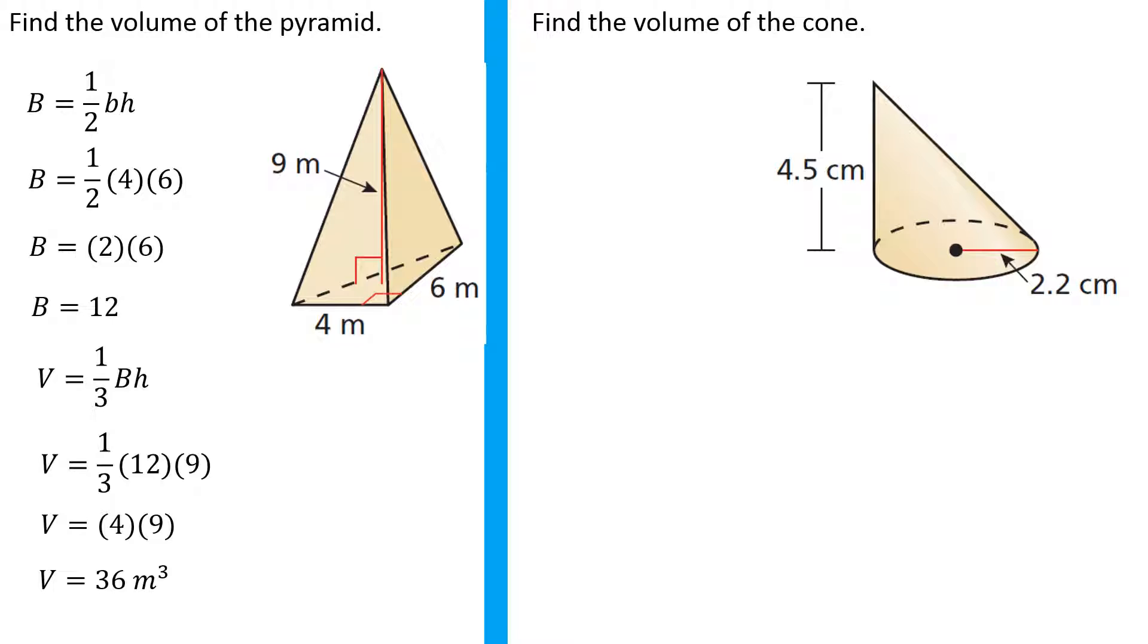Okay, there's a cone for the next example. Of course, the base for a cone is a little bit different - it's a circle. So for the base I have to go pi r squared. 2.2 quantity squared - most of us would probably grab a calculator at this point. 2.2 times 2.2 is 4.84.